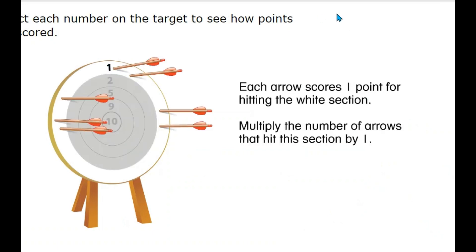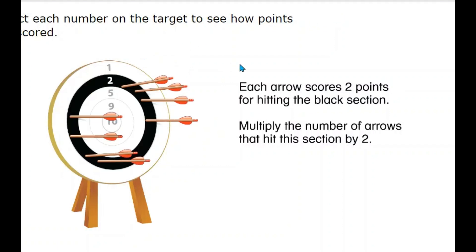Each arrow scores 1 point for hitting the white section. Multiply the number of arrows that hit this section by 1. Each arrow scores 2 points for hitting the black section. Multiply the number of arrows that hit this section by 2.